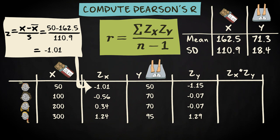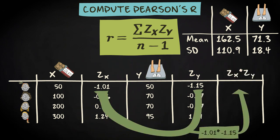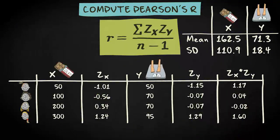In the next step, we compute the products of every z-score on x with every z-score on y. So, for the first case, that's minus 1.01 times minus 1.15 equals 1.17. These are the results for the other three cases.